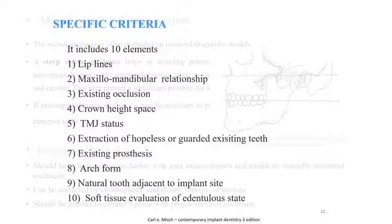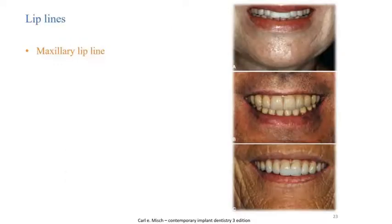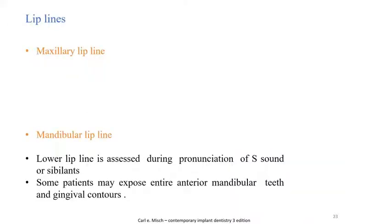There are different categories for the lip line: the high lip line, low lip line, and medium lip line. The mandibular or lower lip line is assessed during pronunciation of the S sound or sibilance. Some patients may expose the entire anterior mandibular teeth and gingival contour.